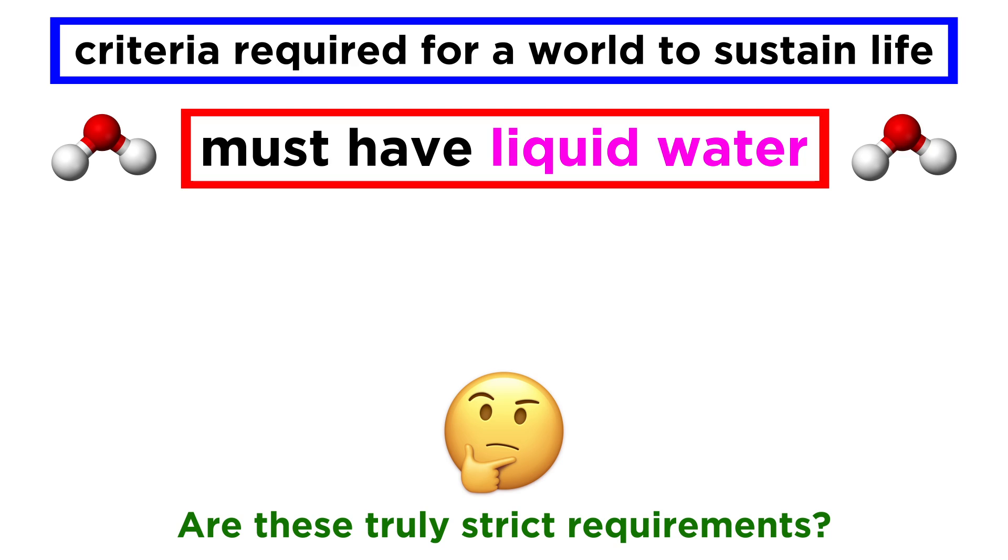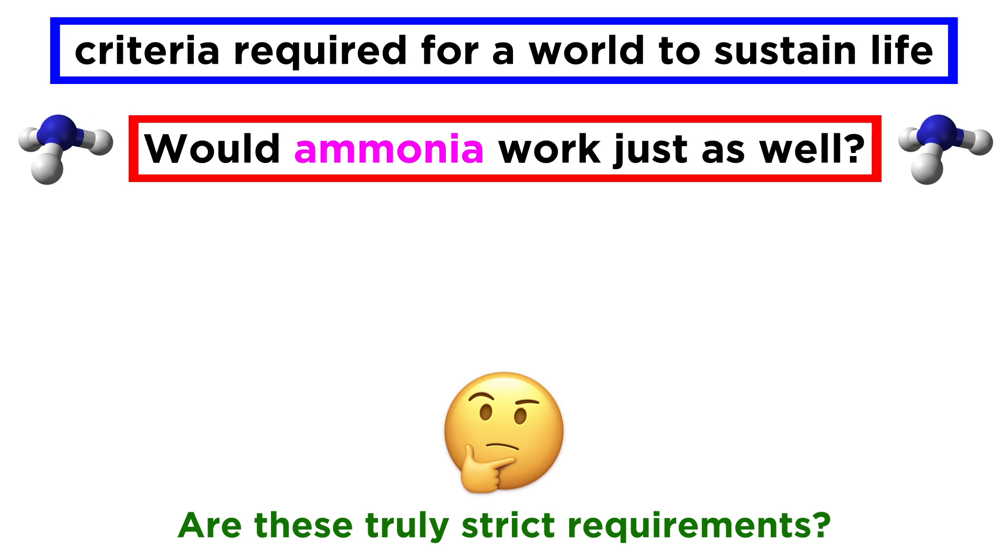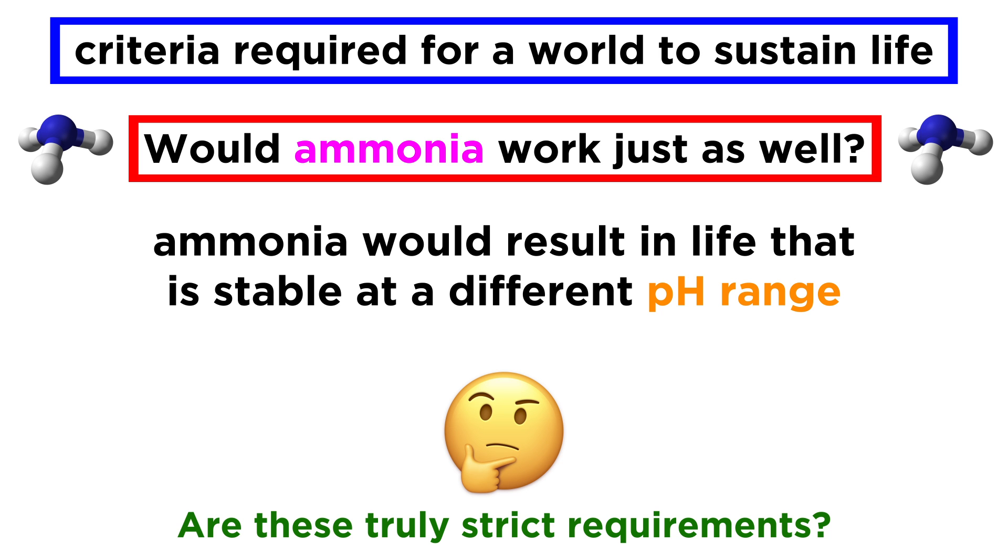Furthermore, who is to say that a liquid medium for life has to be water? Water works very well because it's amphoteric, it can act as an acid or a base, participating in a variety of acid-base reactions that are biochemically relevant, allowing for biosynthesis. Would something like ammonia work just as well? Ammonia could hypothetically perform the same function as water. It would just result in a kind of life that is stable at a dramatically different pH range. But we certainly can't say that it is impossible.